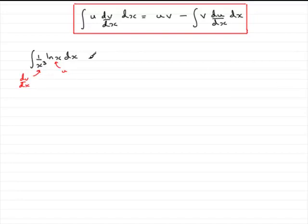Now, let's see what happens. Well, I'm going to change 1 over x cubed, first of all, to x to the power minus 3. And then we've got natural log of x with respect to x.